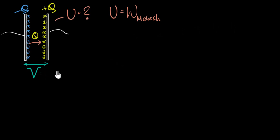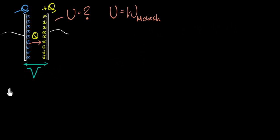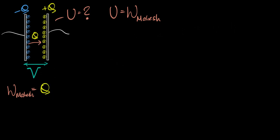So here's the question: the potential difference between the two plates is V, and the total charge transferred from one plate to the other is Q. What is the total work done in transferring that charge? My common sense says: to move one coulomb of charge I do V amount of work. I moved Q amount of charge, so the total work must be Q times V.